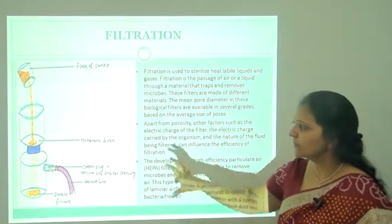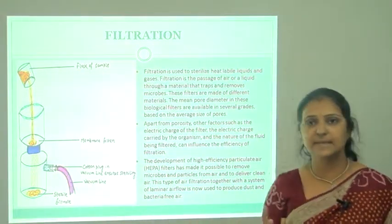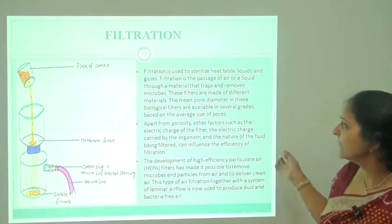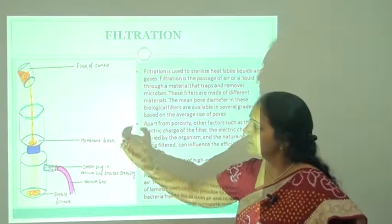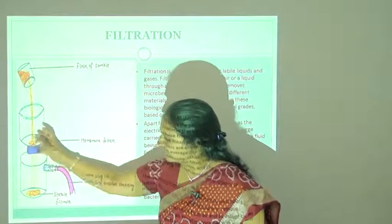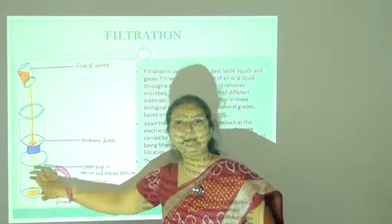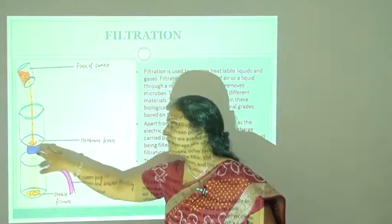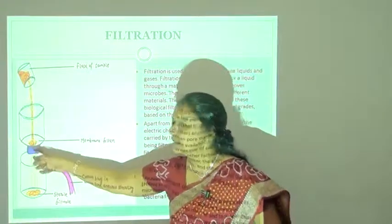The filtration unit contains a membrane filter made of cellulose with different pore sizes such as 0.45 microns. The material is filtered using a vacuum pump — microorganisms remain on the membrane filter while the liquid passes through. This filtered liquid is totally sterile, completely free from any kind of living organism, and the organisms are retained on the membrane filter.